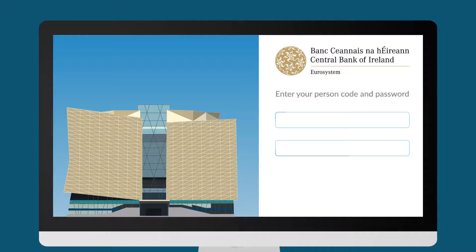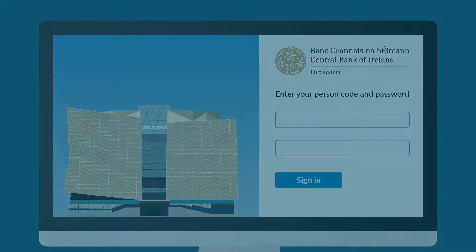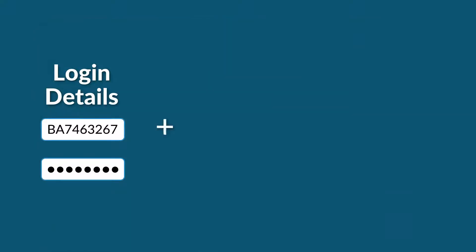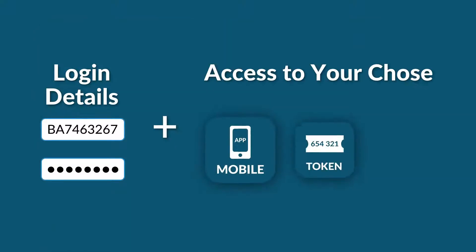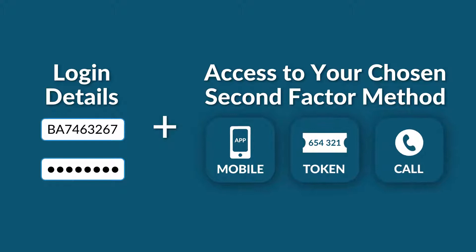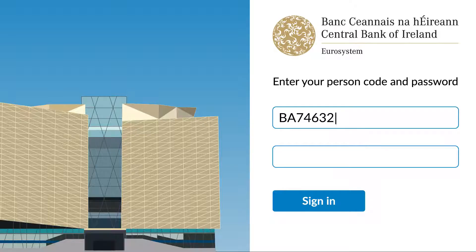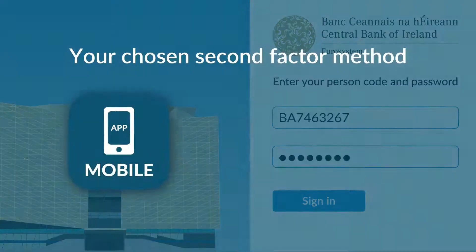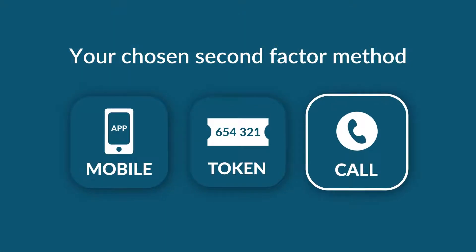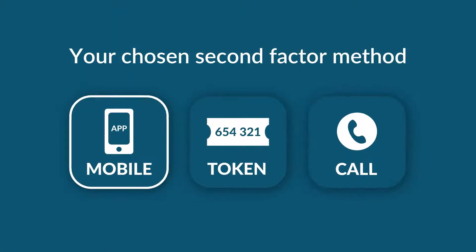Each time you log into the Central Bank of Ireland portal, you will need your login details and access to your chosen second factor method, which you set up when registering. Firstly, you need to enter your person code and password. Then you will be prompted to use your chosen second factor method.